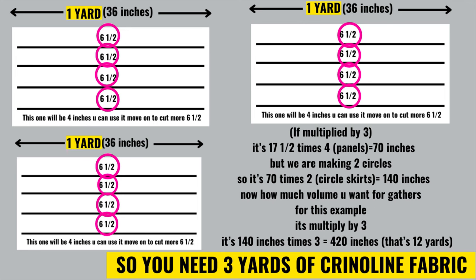Now let's do the math. So far we got 17 and a half times the four panels, and that's 70 inches. But we are making two circle skirts, which makes the 720 circle skirt, so it's 70 inches times two circle skirts and that equals 140 inches. Next, take the 140 inches and times it by three, which is how full you want your gathers, and that equals 420 inches.